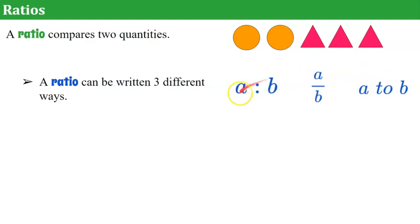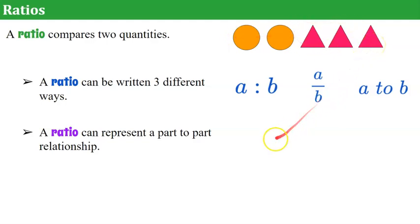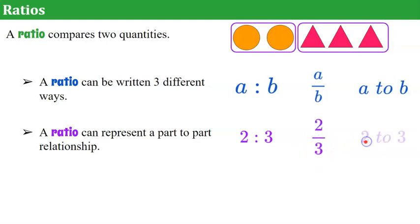I tell my students all three ways are acceptable. One is not more correct than the other. But if you're given one with a colon, I would keep it in the form that it's been given to you, unless you're writing it from scratch. Now, a ratio can represent a part-to-part relationship. So if we look at our set of figures up here, we have part that is circles and another part that is triangles. So we could express that as a ratio of two circles to three triangles, or 2/3, or two to three.